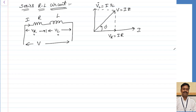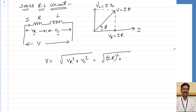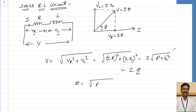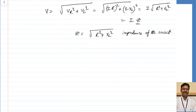Let us assume this resultant voltage is leading the respective current by some angle phi. From this parallelogram, I can calculate V = √(Vr² + Vl²). Since Vr = IR and Vl = I·XL, this becomes V = I·√(R² + XL²), which we represent as Z, where Z = √(R² + XL²). This is called the impedance of the circuit, and impedance is represented in ohms.